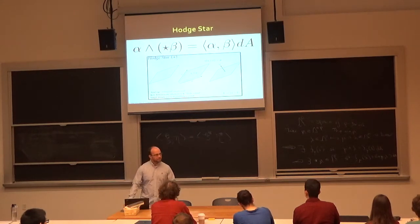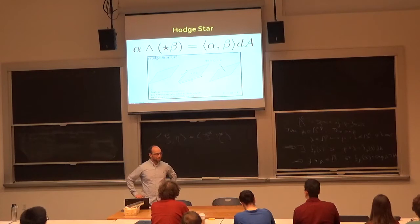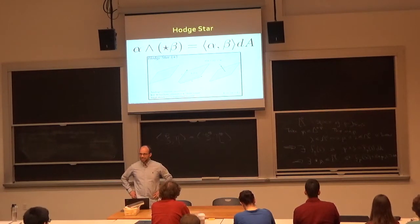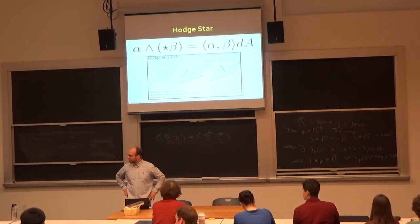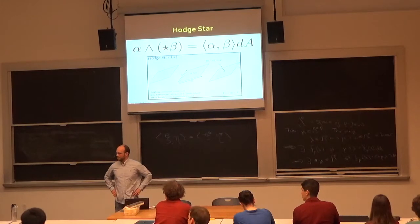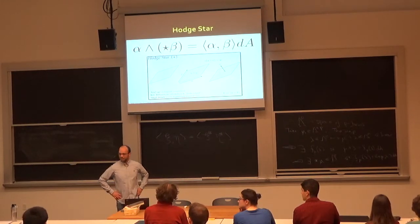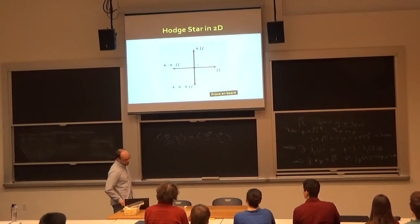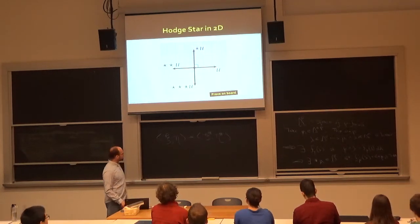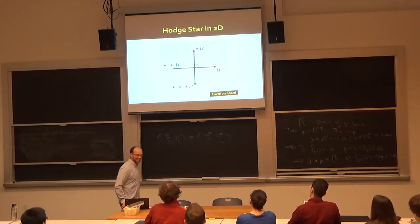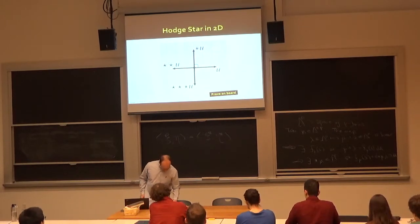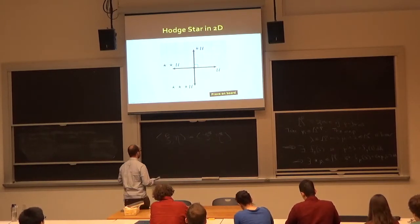In two dimensions, the Hodge star of a one-form over R2 is another one-form, since 2 minus 1 equals 1. It turns out that the Hodge star in R2 simply rotates by 90 degrees. Let's prove that. In your homework, you'll do essentially the same calculation in 3D.